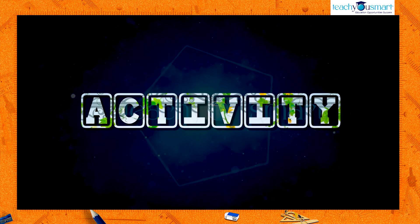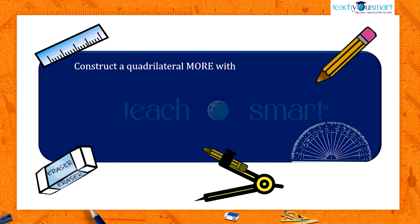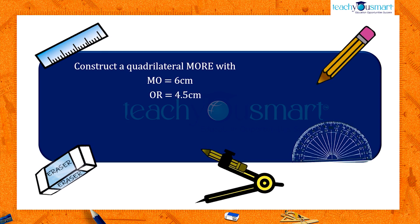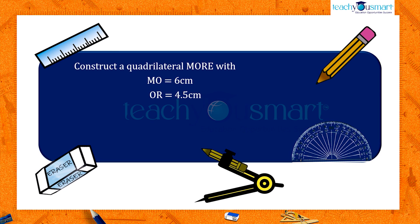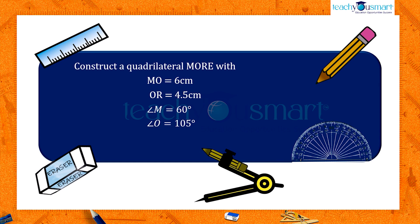Before winding up let's do an activity. Construct a quadrilateral MORE with MO equals 6 cm, OR equals 4.5 cm, angle M equals 60 degrees, angle O equals 105 degrees, angle R equals 105 degrees.